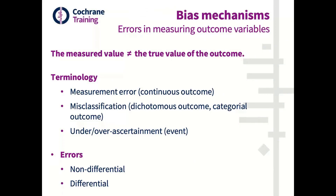Assessing the outcomes in randomized controlled trials is a very important step. However, it can be subject to errors in measurement. When we talk about errors in measuring outcome variables, we mean that the value of the outcome being measured is different from its true value. For example, you want to measure pain in a given patient whose true pain level is 7 on a scale from 0 to 10, but the measured value is 7.3.